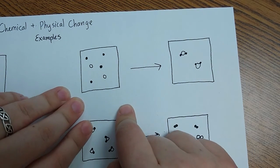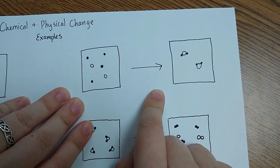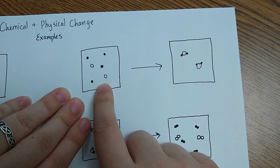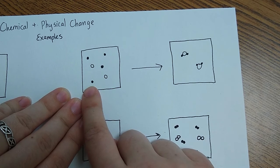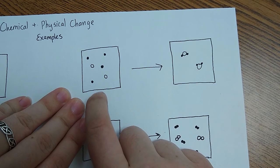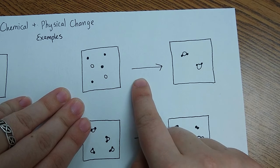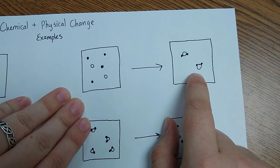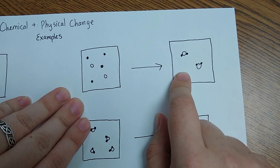Now sometimes chemical changes look a little bit different than those. It doesn't always have to be one or two different atoms together. So over here we have our scenario. We have two different types of atoms, we have a reaction, and now they have formed a molecule with one white atom and two black atoms.